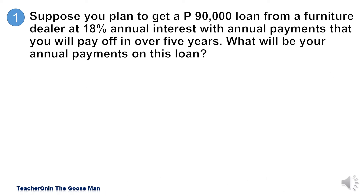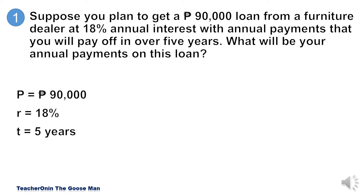Let's have our example. Suppose you plan to get a P90,000 loan from a furniture dealer at 18% annual interest with an annual payment that will pay off over 5 years. What will be your annual payments on this loan? Before we solve this problem, let us consider the given: the present value is P90,000, the rate is 18%, and the time is equal to 5 years.